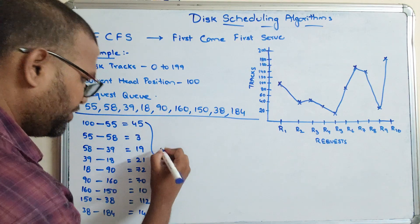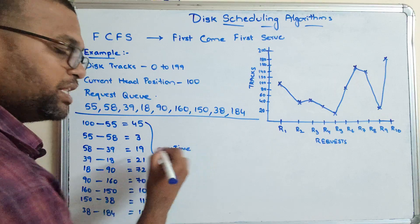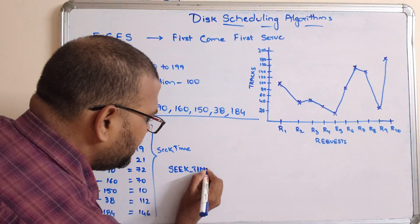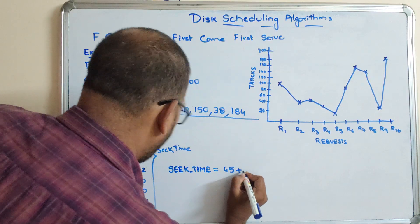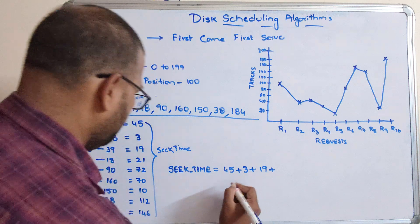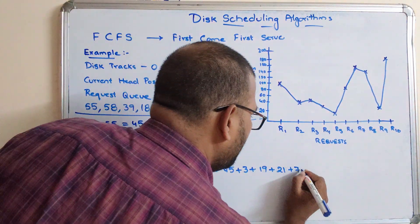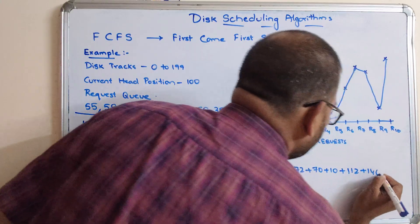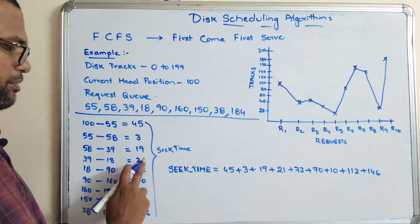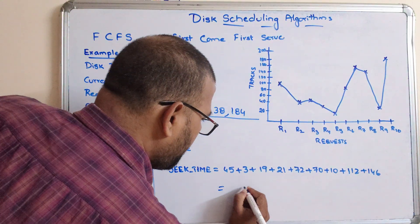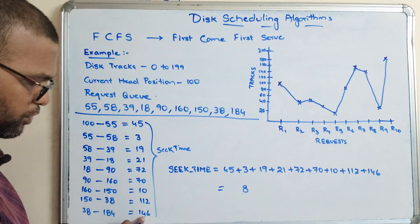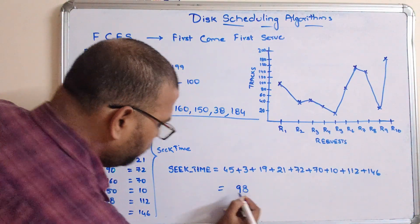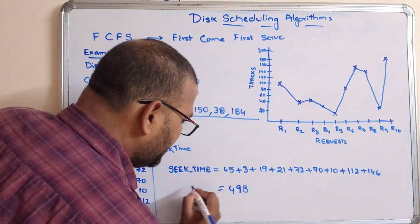Seek time means moving the read/write head from one position to another. The total seek time is the sum of all individual moves: 45 + 3 + 19 + 21 + 72 + 70 + 10 + 112 + 146 = 498 tracks total.